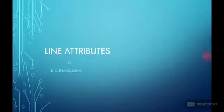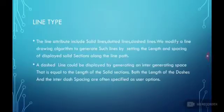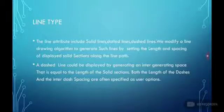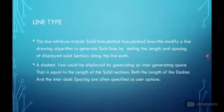Good morning everybody. Today we discuss the topic about line attributes. First we discuss the line type. The line attributes include solid lines, dotted lines, and dashed lines. We modify a line drawing algorithm to generate such lines by setting the length and spacing of displayed solid sections along the line path. A dashed line could be displayed by generating an inter-dash spacing that is equal to